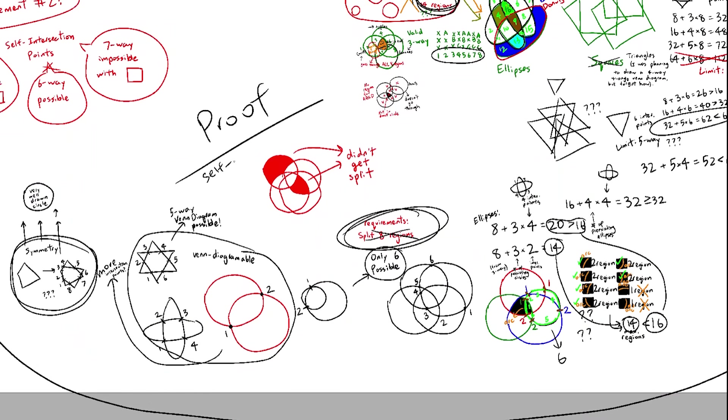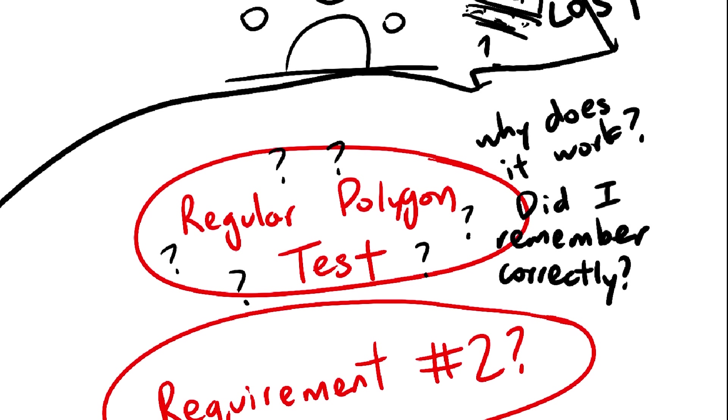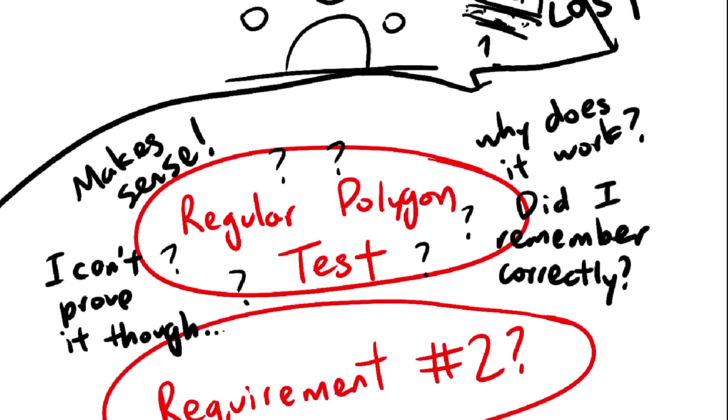The reason I never mentioned this until now was because there was no need to, it was a proof with no source needed. But if I'm being honest, I have absolutely no clue how the regular polygon test works. It kind of makes sense, but I just cannot see the connection. I should probably explain it.